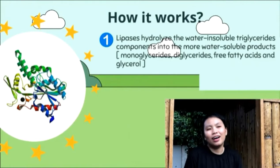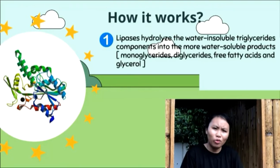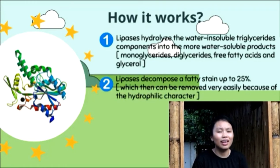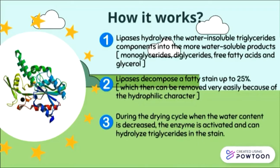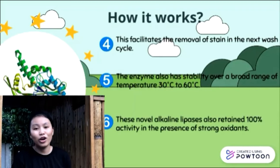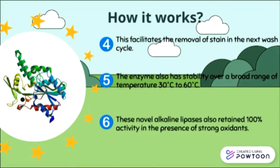How does it work? Lipase hydrolyzes the water-insoluble triglyceride component into more water-soluble products. Lipase then decomposes fatty stains by up to 25% during the drying cycle. When the water content decreases, the enzyme is activated and can hydrolyze the triglyceride. This facilitates the removal of stains in the next wash cycle. The enzyme also has stability over a broad temperature range of 30 to 60 degrees Celsius, and this alkaline lipase retains 100% activity in the presence of strong oxidants.